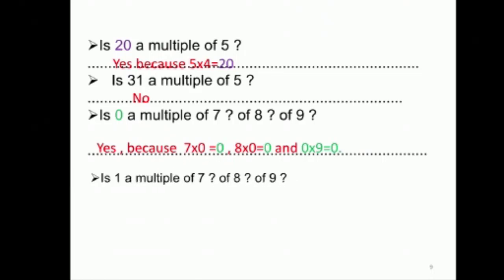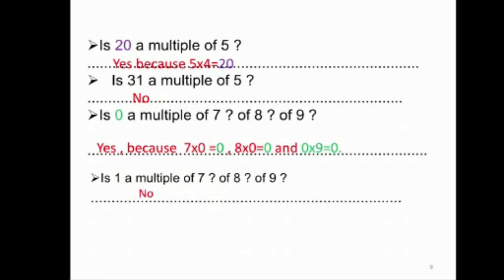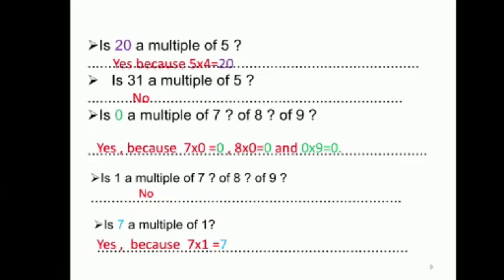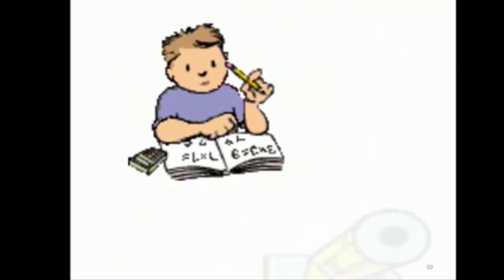هل الـ one هو ملتبل للـ seven؟ إذا بنحسب أنه هو ملتبل للـ seven، معناتها seven times شو بيعطينا one؟ فيه نمبر أنا بدرب بالـ seven وبيعطيني one؟ أكيد لا، ما عندي ولا نمبر seven times شو بيعطينا one. بس الـ seven هو ملتبل للـ one، يعني إذا سألتك الـ seven ملتبل للـ one؟ آه، لأنه الـ one times seven بيعطينا seven. فالملتبل بدي يكون بجواب ضرب، بدي يكون بالـ product. Yes, because seven times one equal seven.